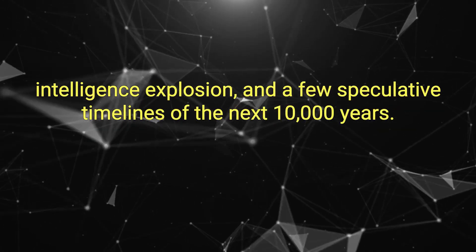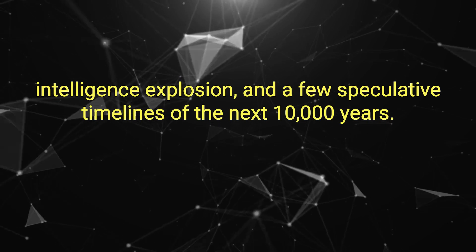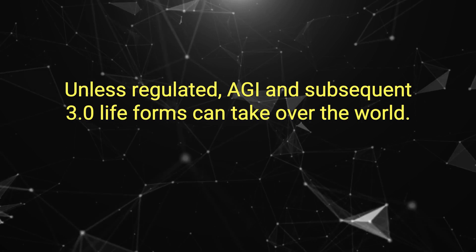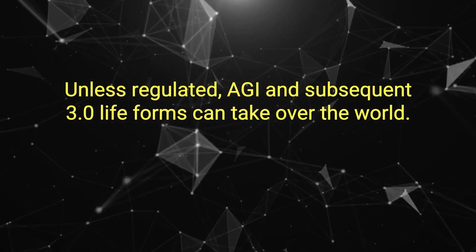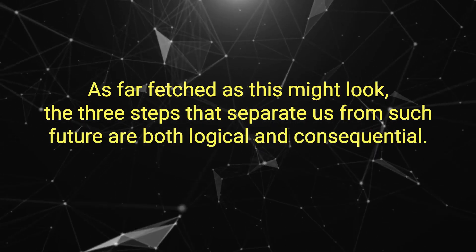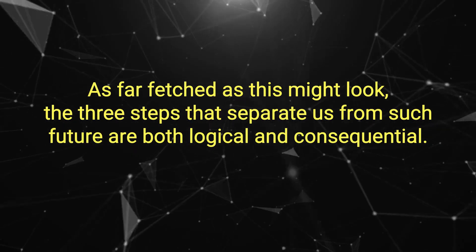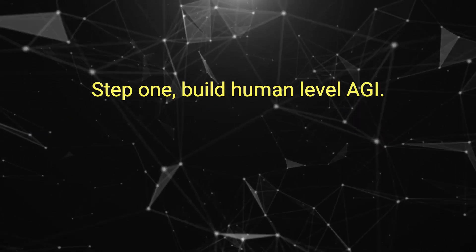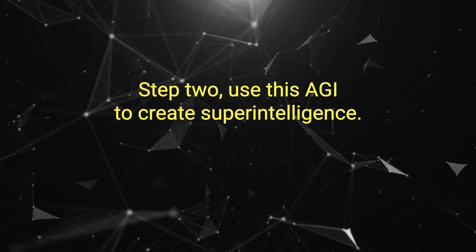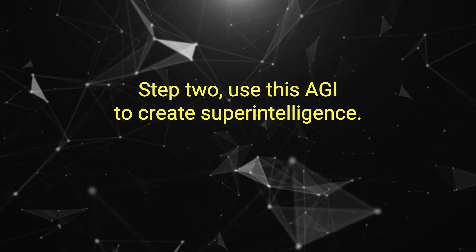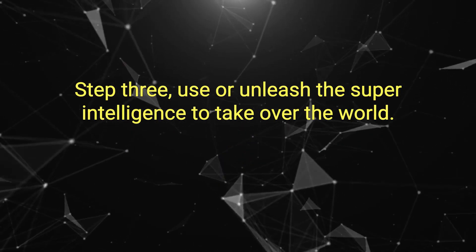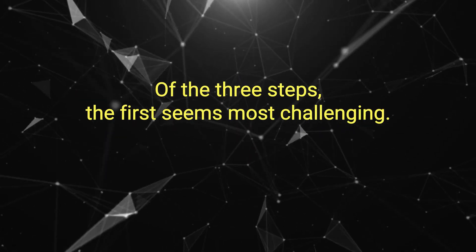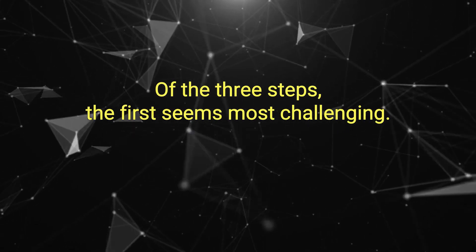Intelligence explosion and a few speculative timelines of the next 10,000 years. Unless regulated, AGI and subsequent 3.0 lifeforms can take over the world. As far-fetched as this might look, the three steps that separate us from such a future are both logical and consequential. Step 1: Build human-level AGI. Step 2: Use this AGI to create superintelligence. Step 3: Use or unleash this superintelligence to take over the world. Of the three steps, the first seems most challenging. But once we build AGI, the holy grail of AI research, the resulting machine should be capable enough to recursively design ever-better AGI and cause an intelligence explosion, leading to the second step.